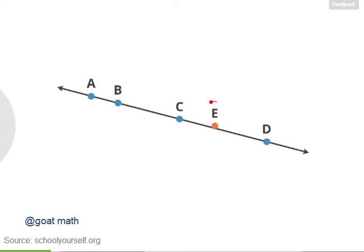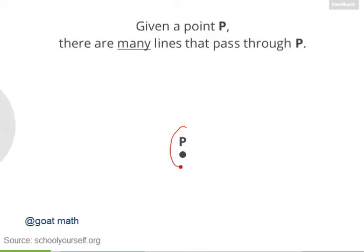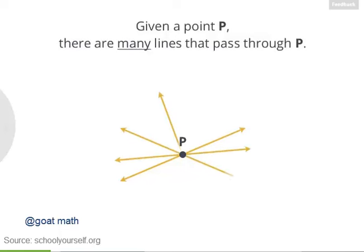For example, while an orange dot representing point E touches the line, point E is not actually on the line. For any given point, like P, there are many, many lines that pass through P.